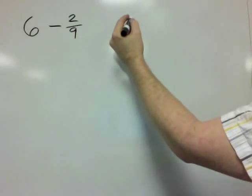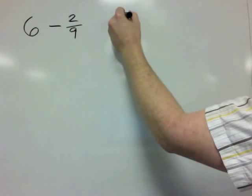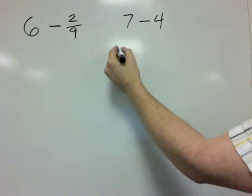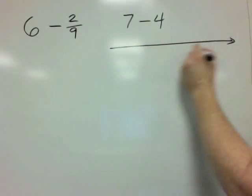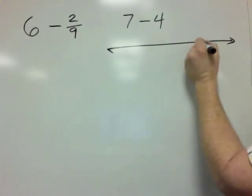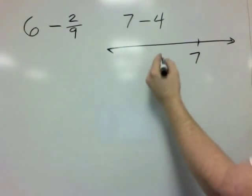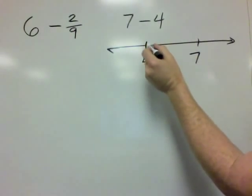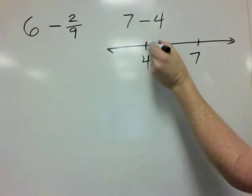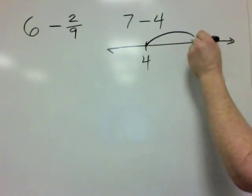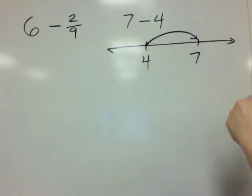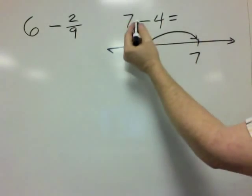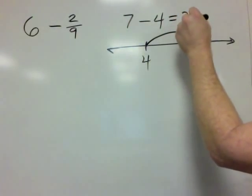For example, when you're growing up, if you think about 7 minus 4, the idea was you would think of a number line and say, well, here's 7 somewhere on the number line, here's 4 somewhere on the number line. How much do you have to add to 4 to get to 7? In this case, the answer would be 3. So 7 minus 4 is equal to 3.